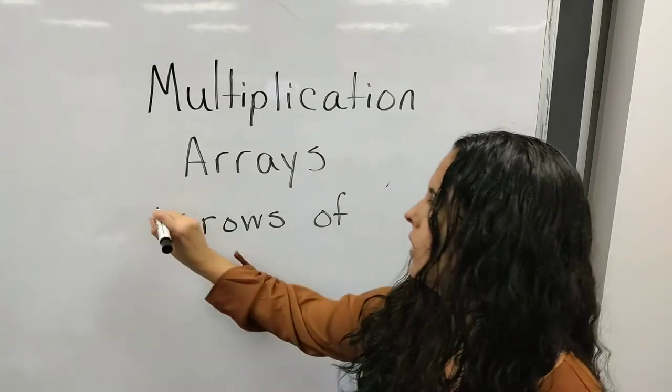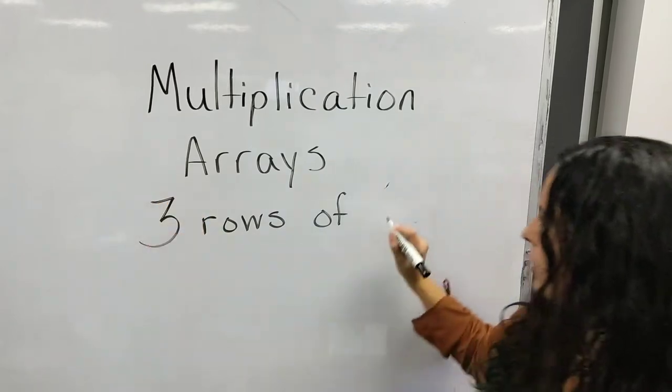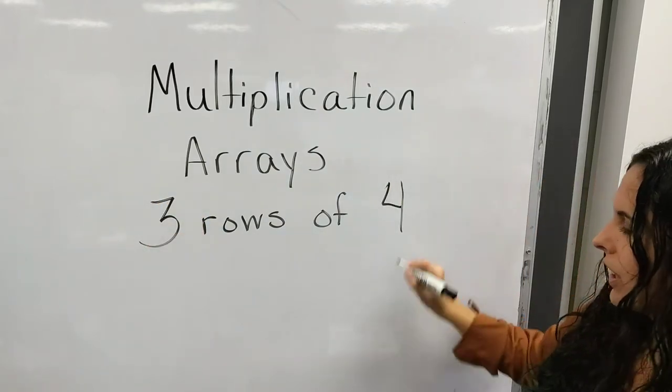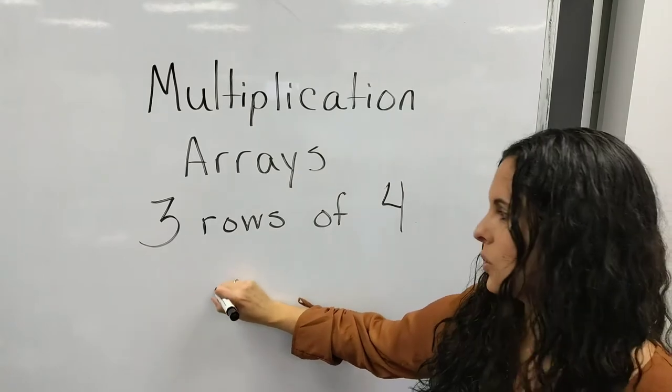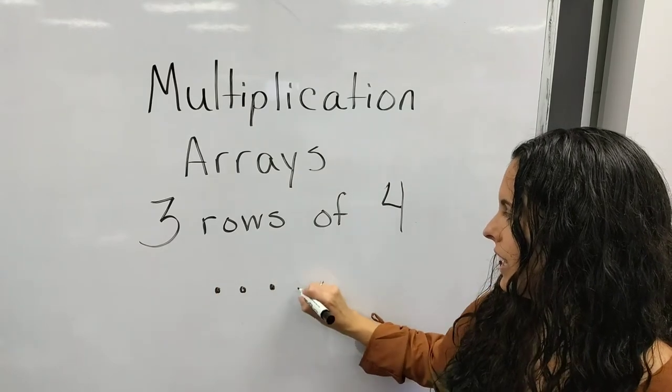Let's do three rows of four. So this time we need three rows with four in each. One, two, three, four.